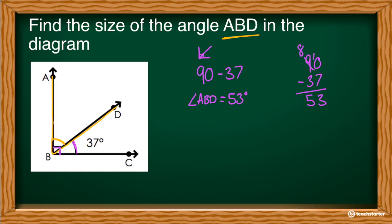So for complementary angles, they add up to 90 degrees. So I just have to take the 90, which is the total, and take away the angles that are already used up.